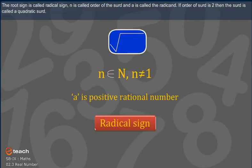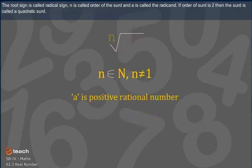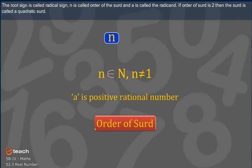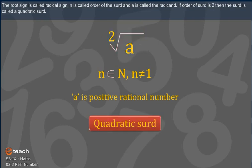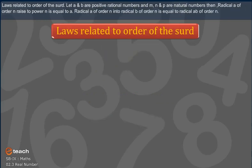The root sign is called the radical sign. n is called the order of the surd and a is called the radicand. If the order of the surd is 2, then the surd is called a quadratic surd.